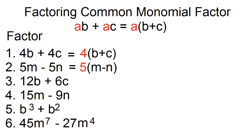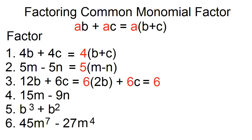Number 3. Factor 12B plus 6C. 12B can be written as 6 times 2B, while 6C can be written as 6 times C. The greatest common monomial factor is 6. 12B divided by 6 is 2B, and 6C divided by 6 is C. The factors are 6 and the quantity 2B plus C.